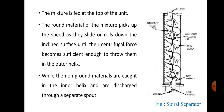Non-round grains do not develop sufficient centrifugal force, so they remain in the inner helix and are discharged through a separate spout. This type of separator is nowadays used for the separation of broken grains or mud balls from soybean after harvesting.